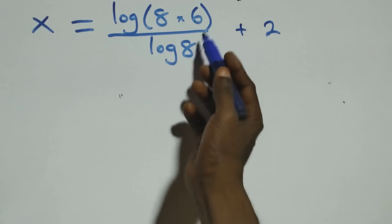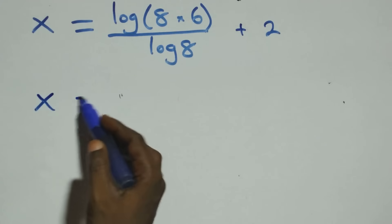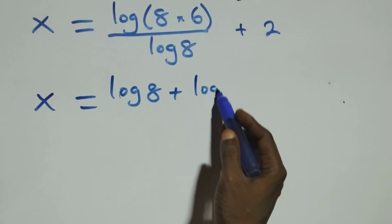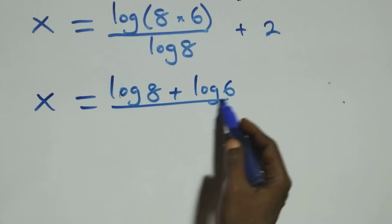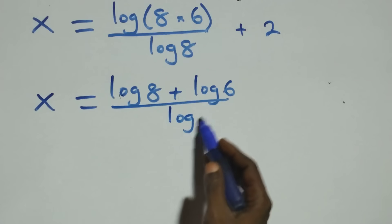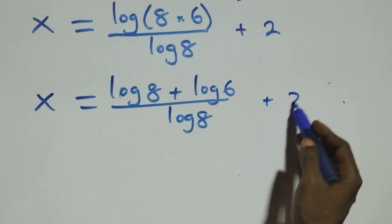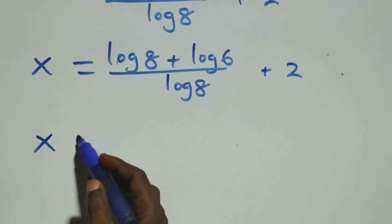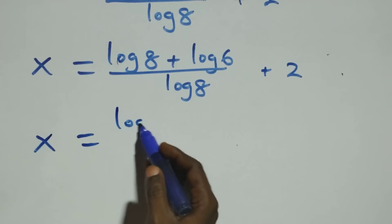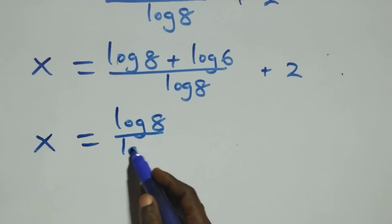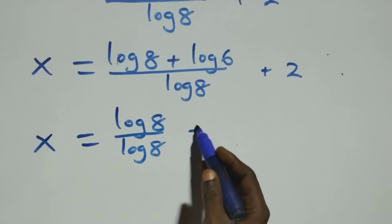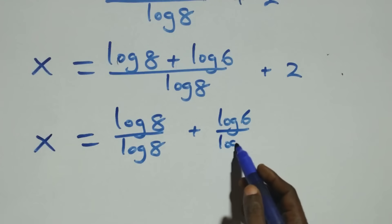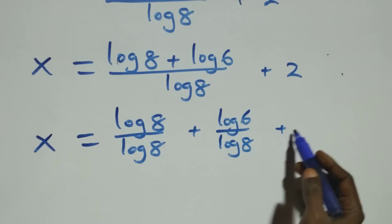Next step here, this also follows the logarithm product rule. And we have x equals log 8 plus log 6 over log 8, plus 2. And here, we separate this into two fractions: x equals log 8 over log 8 plus log 6 over log 8 plus 2.